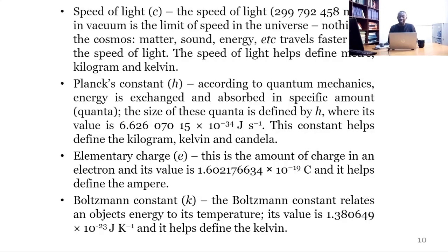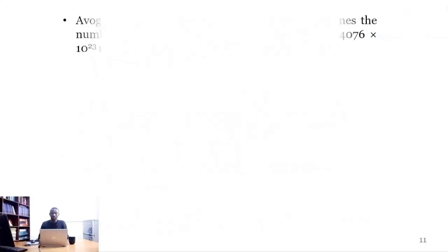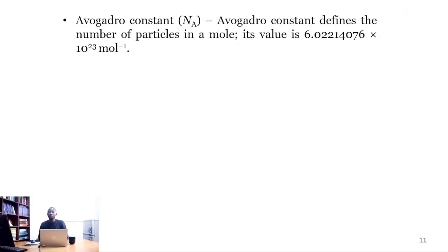Boltzmann's constant helps define the kelvin. Avogadro's constant defines the number of particles in a mole. Its value is 6.02214076×10²³ per mole.